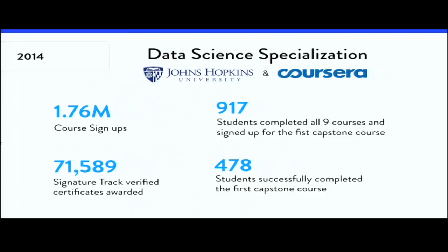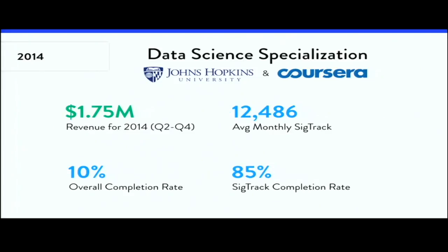Here is data that Johns Hopkins University professors shared about their data science specialization, which was one of the most popular on Coursera at the time. It was a nine-course specialization that received 1.76 million sign-ups and almost 72,000 certificates were awarded — called signature track at the time. The revenue in just three quarters of 2014 was $1.75 million. Another interesting number is how completion rates go up when somebody buys a certificate: from 10% to 85%.